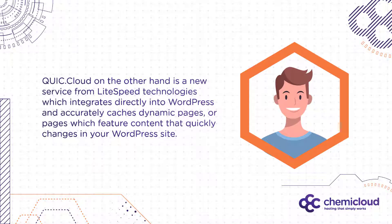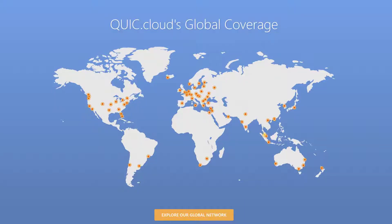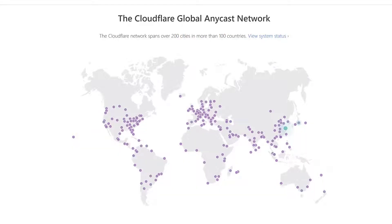QuickCloud, on the other hand, is a new service from Lightspeed Technologies which integrates directly into WordPress and accurately caches dynamic pages. The biggest difference in terms of CDN is the total number of available points of presence, or POPs — the individual data centers from where CDN providers can deliver content. Because it's still very new, QuickCloud only has a little over 40 POPs around the world, which is still very large for a new provider. Cloudflare, on the other hand, has over 200 points of presence, giving it an unmatched advantage for faster delivery of static content anywhere in the world.